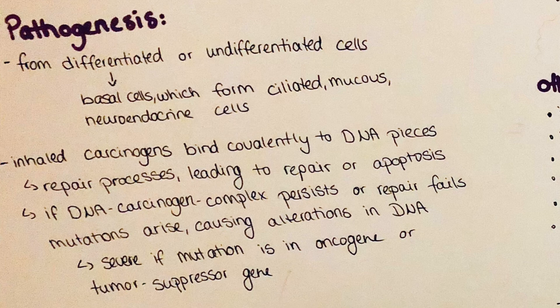Tumors can arise from different cells within the lung. These cells are generally divided into differentiated or undifferentiated cells. The differentiated cells are the basal cells, which are considered as the progenitor cells for ciliated, mucus, and neuroendocrine cells. The undifferentiated cells are the pneumocytes of type 1 and type 2, which form the epithelial lining of the inner surface of the lung.